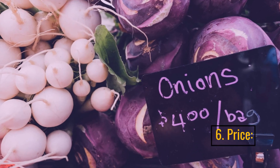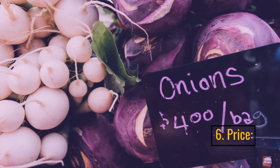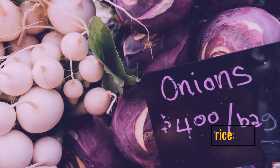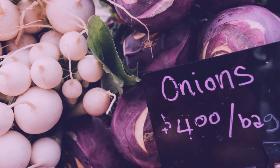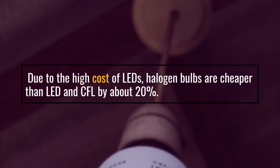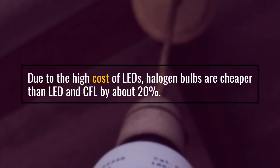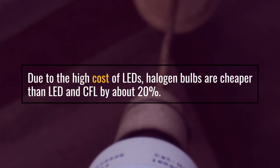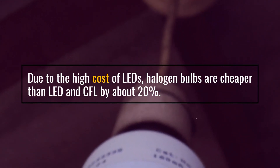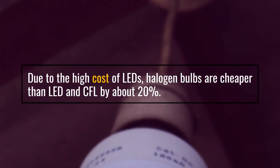6. Price — due to the high cost of LEDs, halogen bulbs are cheaper than LED and CFL by about 20%.